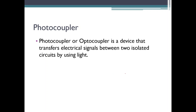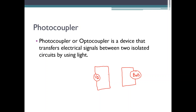You have a bulb here with some wires, and you have a voltage source — some source of energy which has to turn on the bulb. These are two separate circuits: circuit 1 and circuit 2. When you switch on the power from circuit 1, you want the bulb connected in circuit 2 to be turned on. But if you observe carefully, these circuits are electrically isolated — there is no connection existing between circuit 1 and circuit 2.